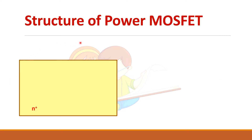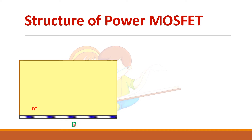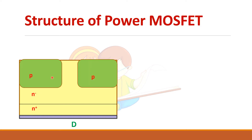Let us see the structure of power MOSFET, which is similar to the power BJT. A normal NPN structure is used for power MOSFET. This N+ region forms the drain of the power MOSFET. To take the terminal out or to make electrical connection we need a metallic layer, so here a metal layer is formed. Then in all power devices we need a drift region to increase the reverse blocking capability of the device. Then this P region forms the body of the MOSFET, in which the N+ regions are grown to make the source of the MOSFET.